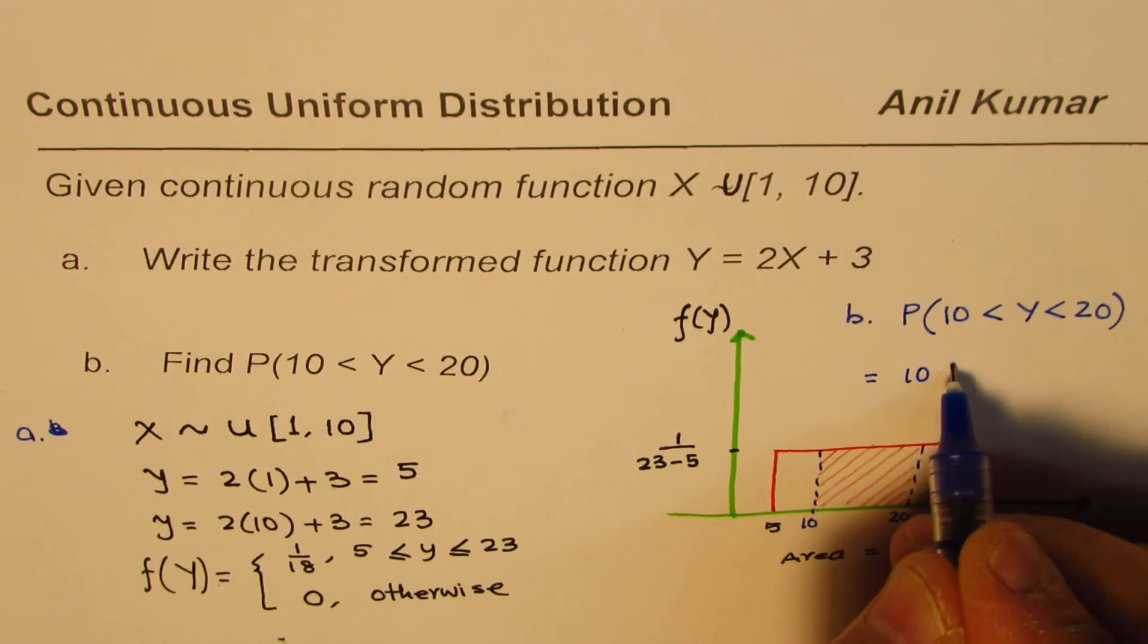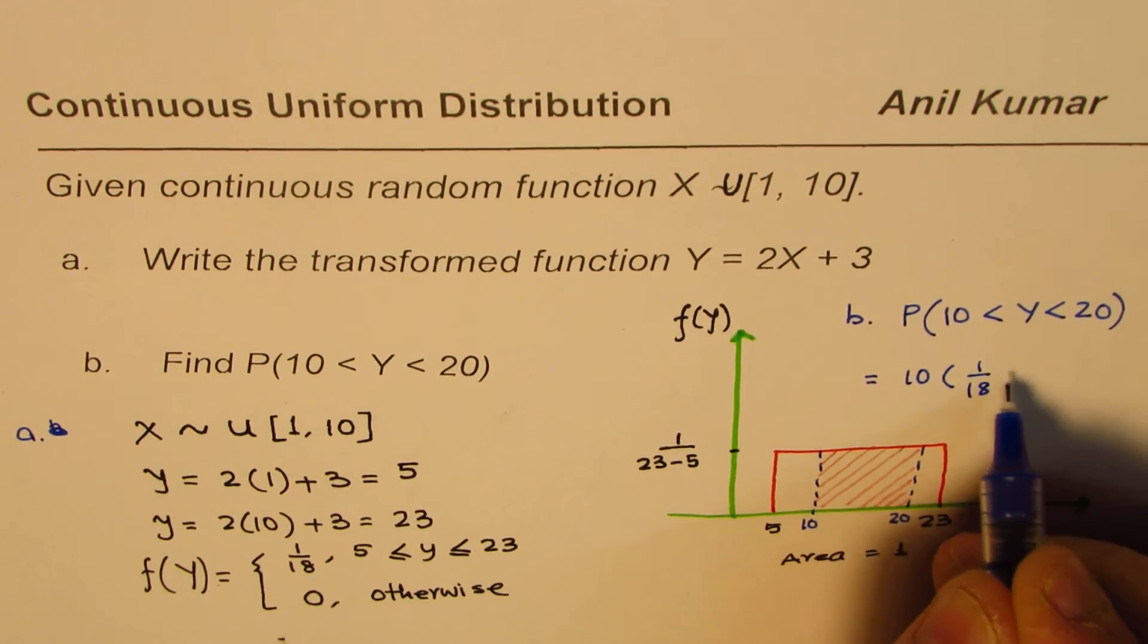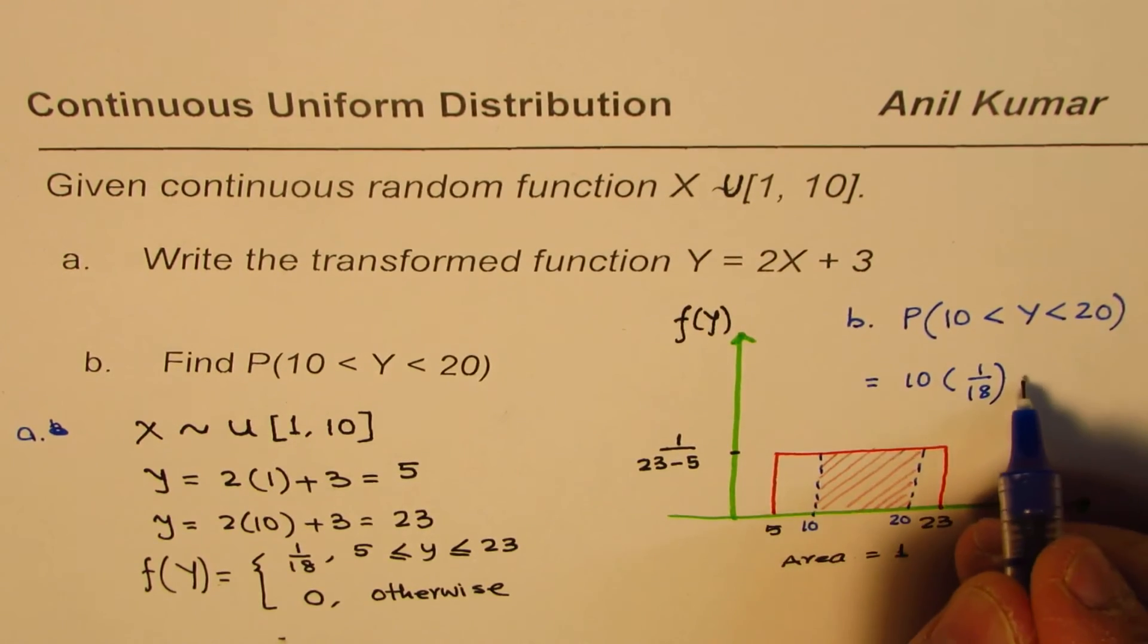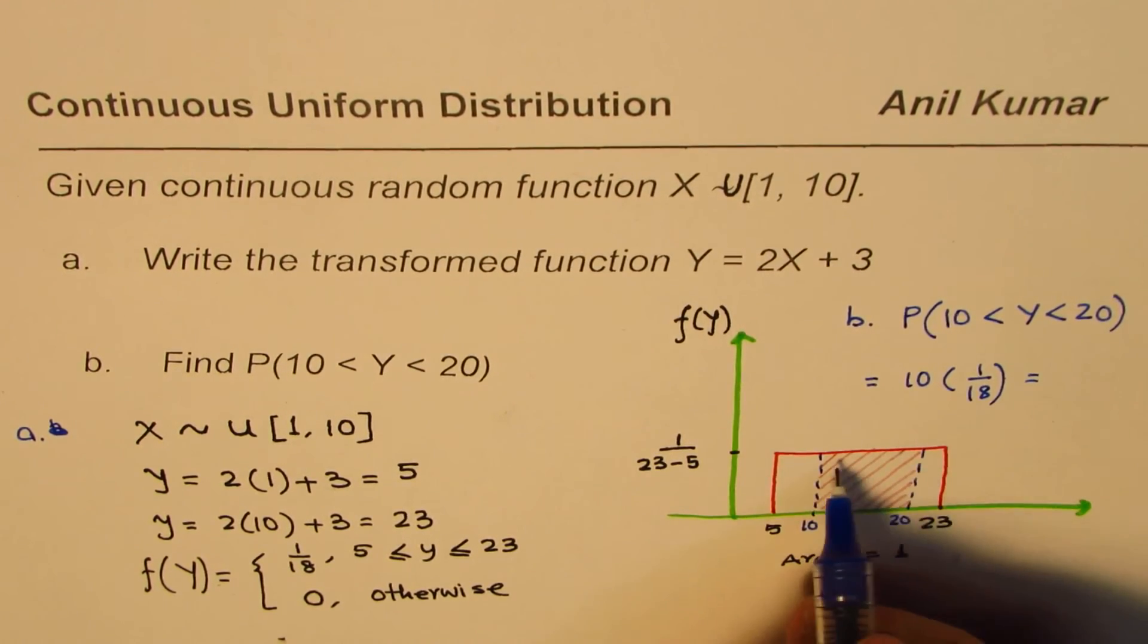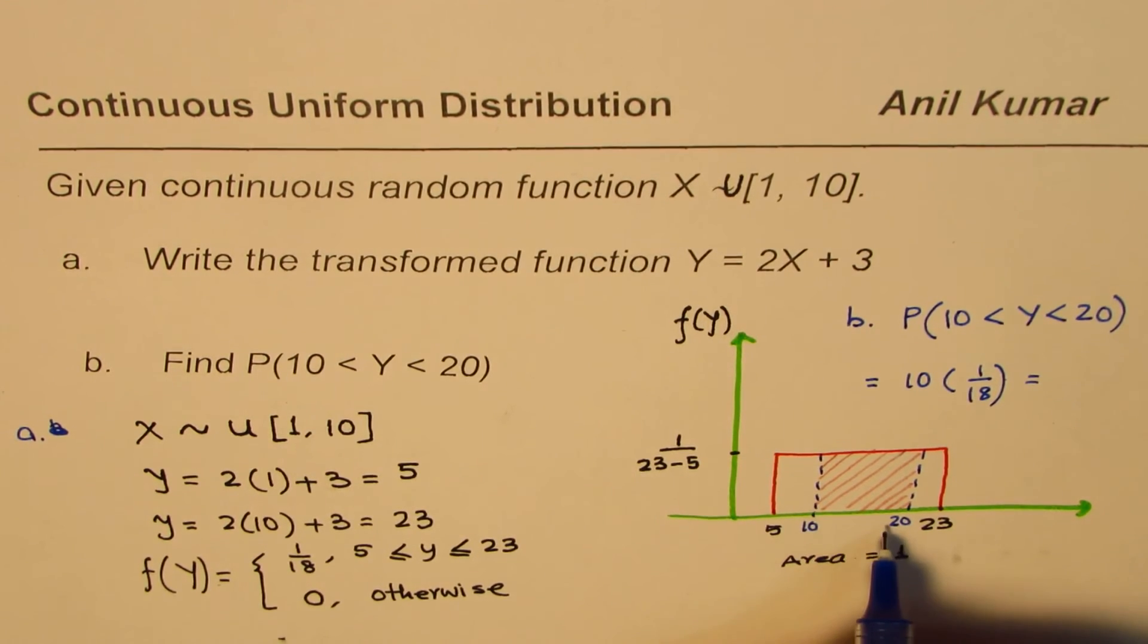So it is 10 times 1 over 18. So that becomes the probability.